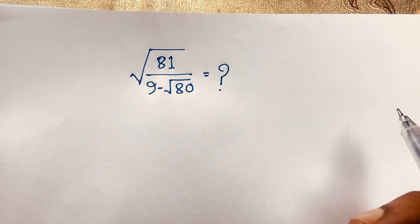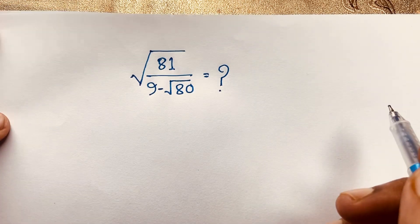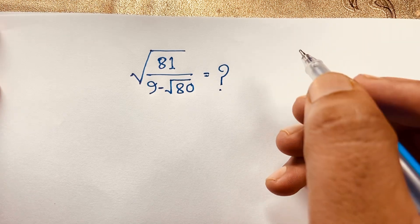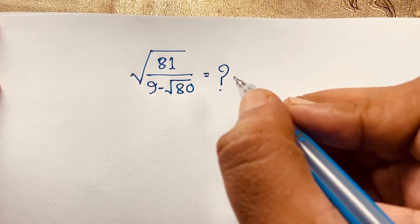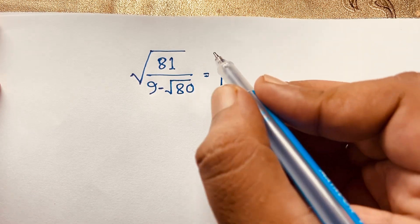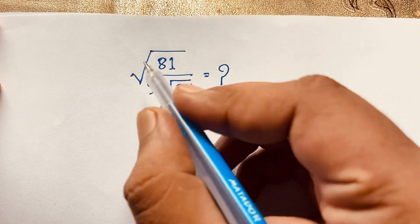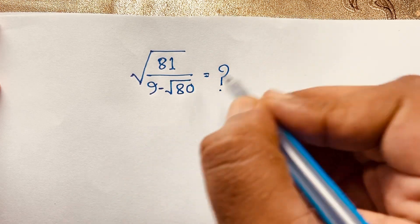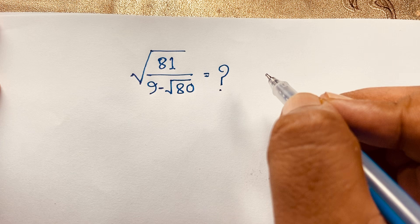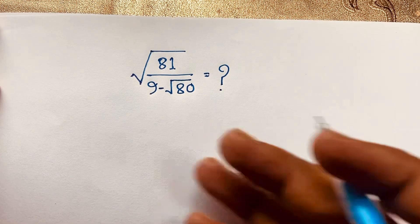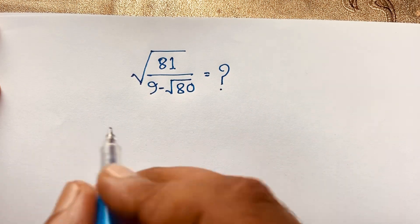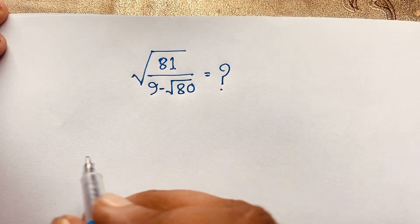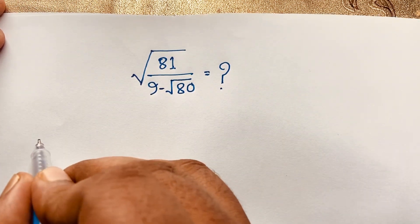Hello everyone, welcome to Russell's Classroom. Today we are solving an interesting square root math problem — how to simplify this math question, which is square root of 81 over (9 minus square root 80). What does this equal? I will solve this using an easy method.